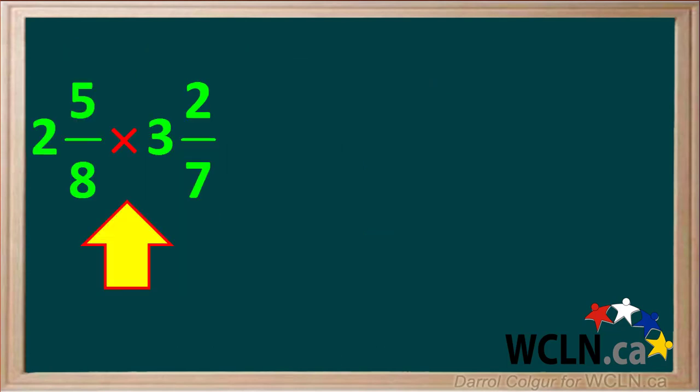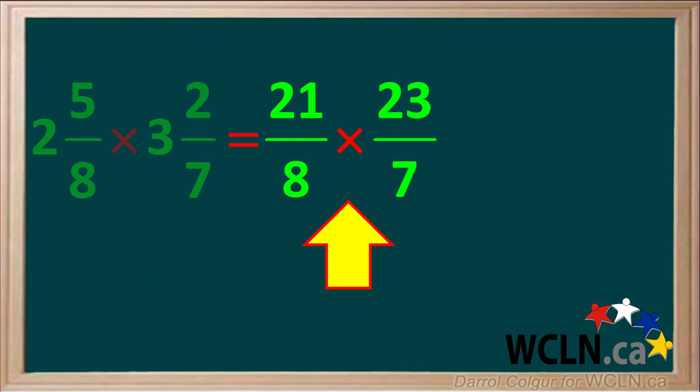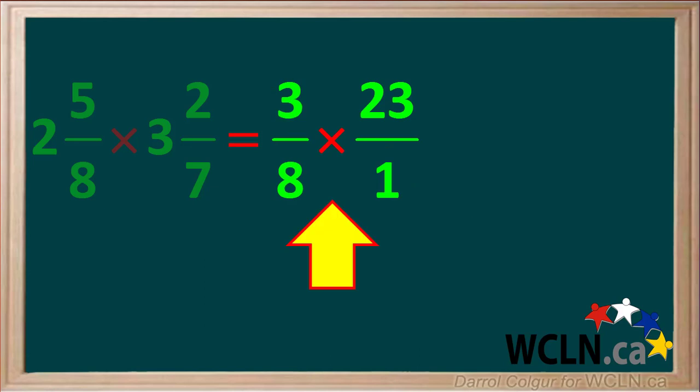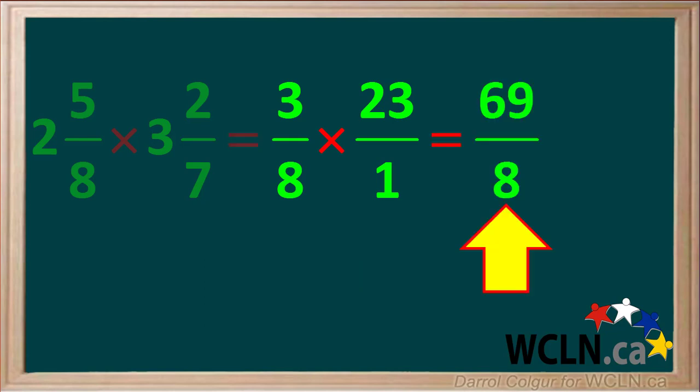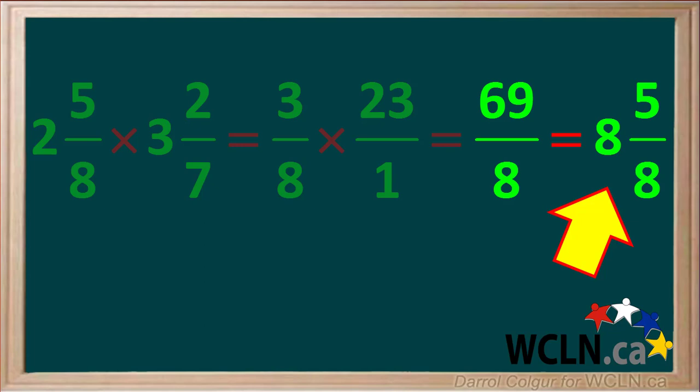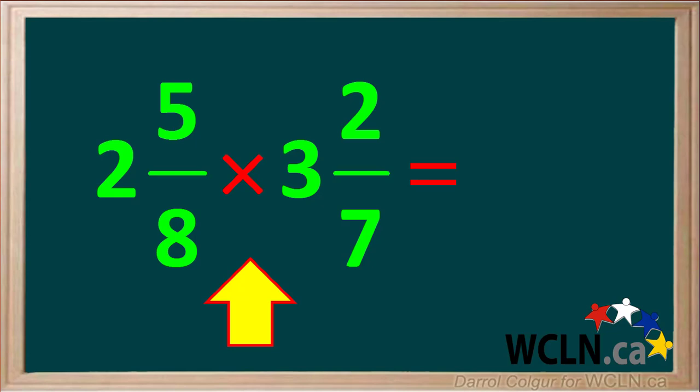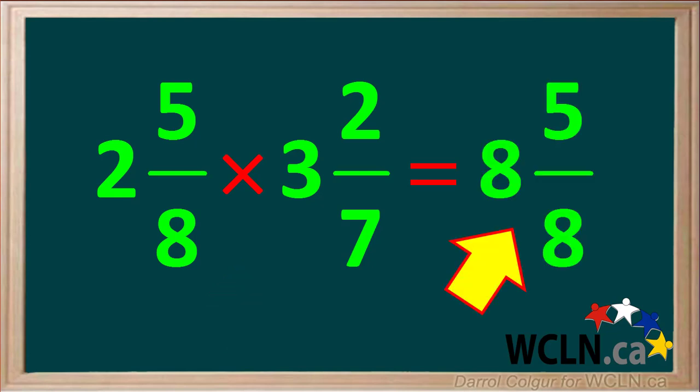Let's summarize this whole question. We're asked to multiply the mixed numbers 2 and 5 eighths by 3 and 2 sevenths. We convert these to improper fractions to give us 21 over 8 times 23 over 7. Dividing both 21 and 7 by 7 gives us 3 eighths times 23 over 1. Multiplying these, we get the improper fraction 69 over 8, which we convert to the mixed number 8 and 5 eighths. So 2 and 5 eighths times 3 and 2 sevenths is equal to 8 and 5 eighths.